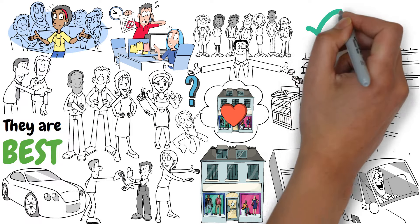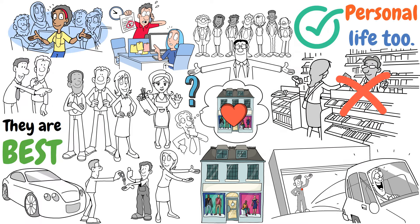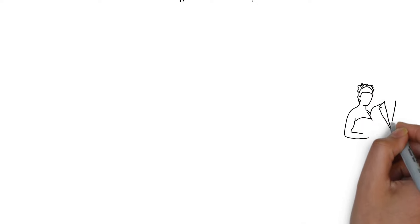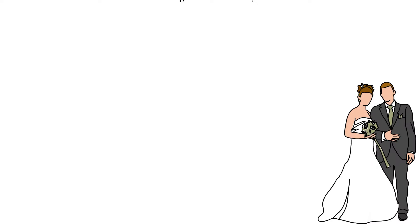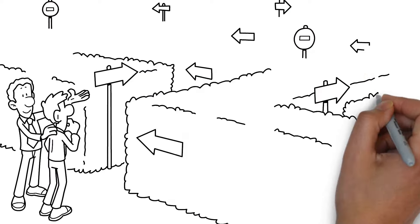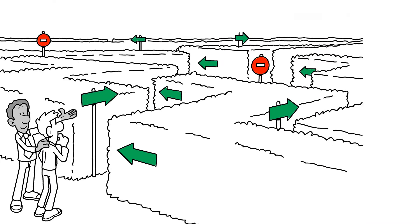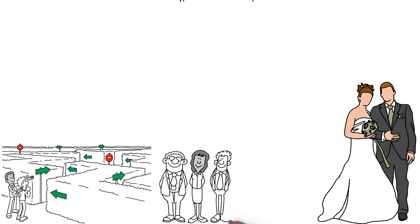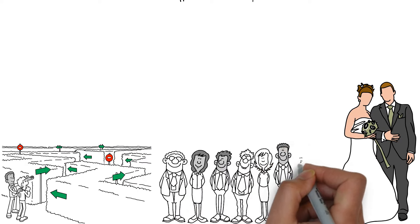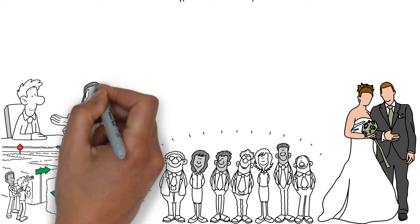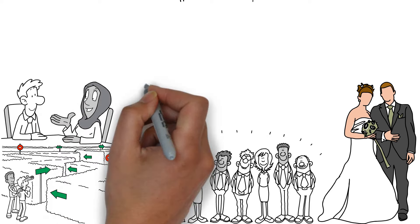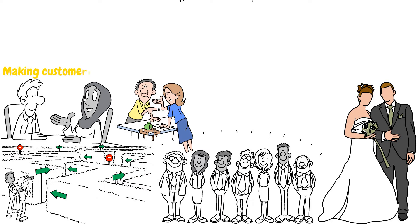I always tell young people to surround themselves with those who are better than themselves. This advice is crucial, not just for business, but in personal life too. One of the biggest decisions many of you will make is choosing the person you marry. Being around people who are better than you helps you grow. I've been fortunate to have mentors, friends, and a spouse who are all better than me, and I learned so much from them. It's important to choose partners who lift you up, not those you think you need to fix.